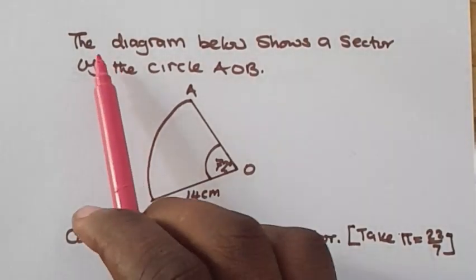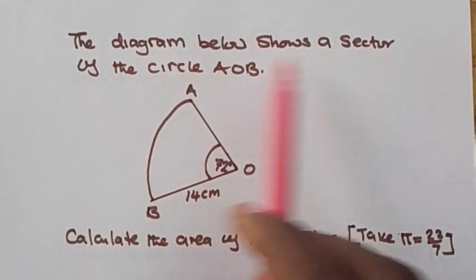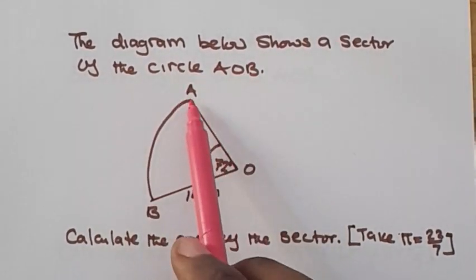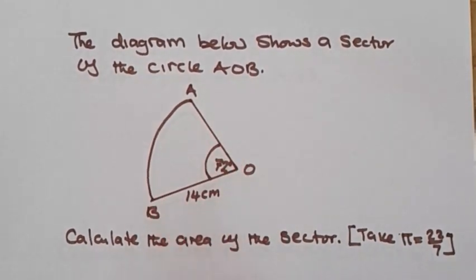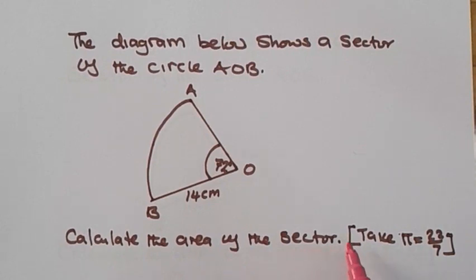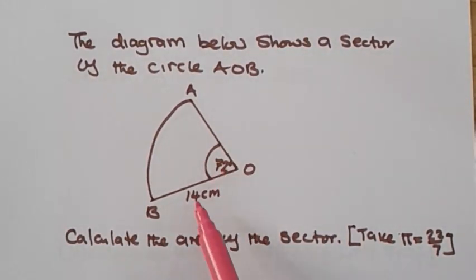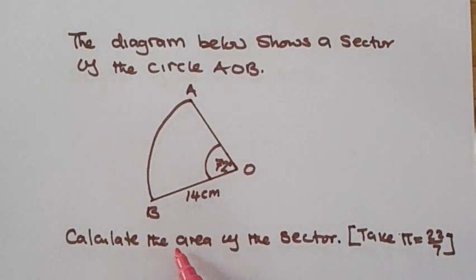The question says the diagram below shows a sector AOB. Calculate the area of the sector. Take pi to be 22 over 7. Here the central angle is 72 degrees and the radius is 14. So for us to calculate the area of this sector,